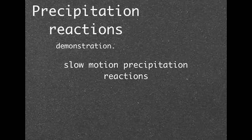All right, precipitation reactions. This is a demonstration that's found in the Heinemann textbook and it's called slow motion precipitation reactions. It's a relatively dull name, I think, so I like to call it the invisible wall demonstration. It involves two chemicals,